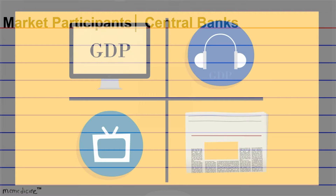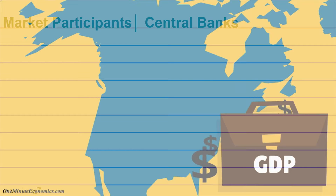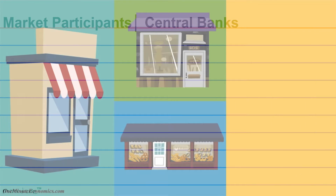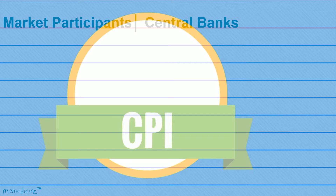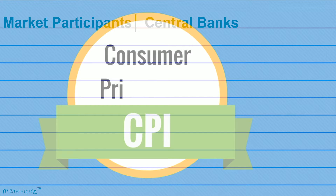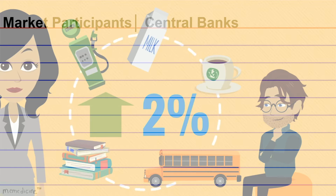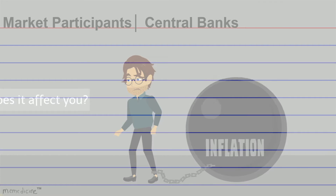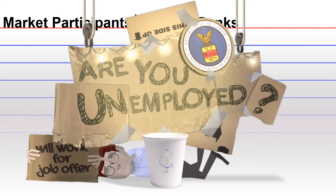Pay attention to news about the GDP — the Gross Domestic Product. You're also going to want to pay attention to the CPI, which is the Consumer Price Index, a very good indicator of inflation. And last but not least, pay attention to high impact news on the unemployment rate.